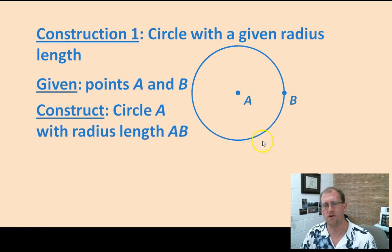How do you construct a circle? Well, if you're given point A and point B and you're supposed to construct a circle with that particular radius, then you put the point of the compass here, put the pencil of the compass on B, and you arc around and make the circle. Pretty simple stuff.